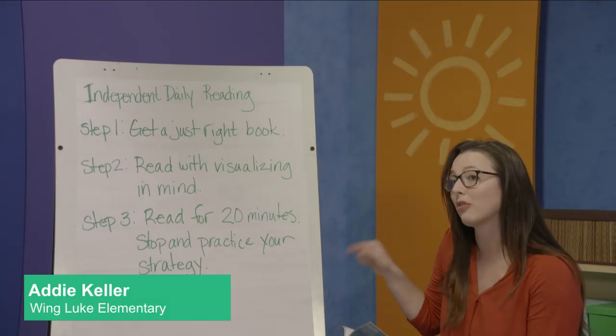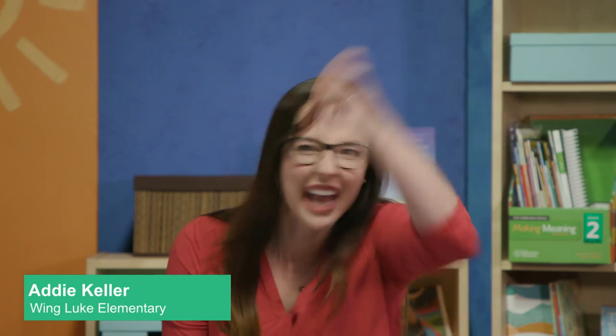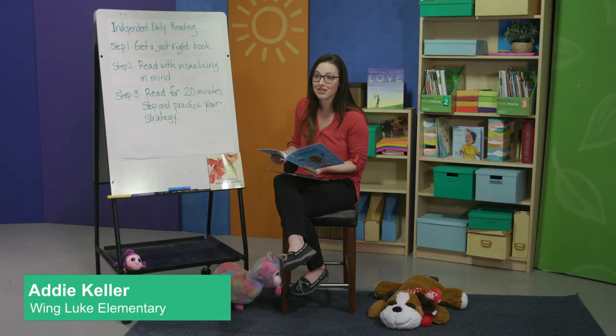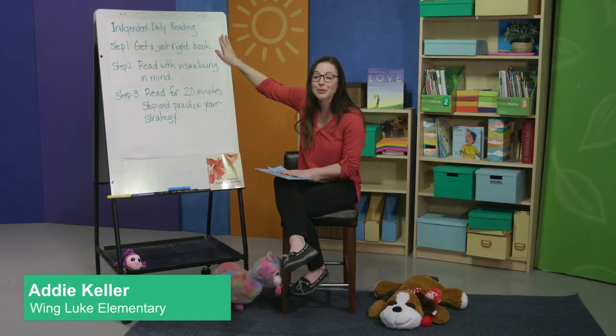Step two: I'm going to read with visualizing in mind. That means that after every two pages, not only am I saying what just happened, but now I'm thinking, "I pictured blank" or "I imagined blank." In this part, I pictured the characters getting different things like coins and stamps, collecting bugs, and how fun the bugs would be as you're trying to catch them. And then step three: keep going for 20 minutes. Stop and practice your strategy after every page. Scholars, I miss you very much. But together, we can keep on learning, and I will see you tomorrow. Bye.